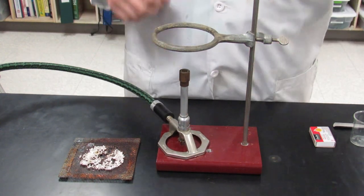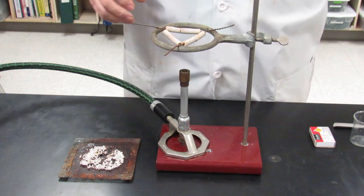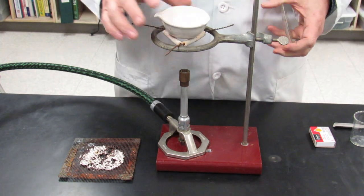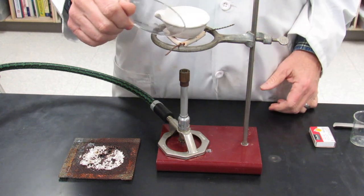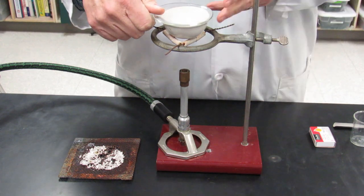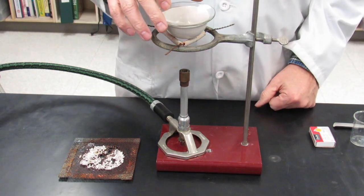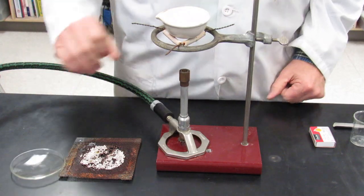Then we're going to take a clay triangle, put it onto the ring stand, and then the evaporating dish on top of that. We do need a watch glass, but we're not going to heat that up initially, but it's going to sit on top like that when we use it. Let's set it aside.